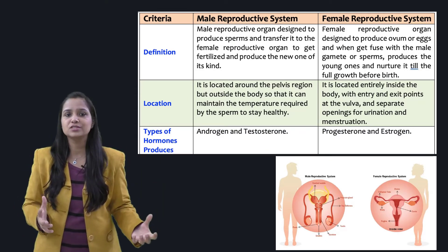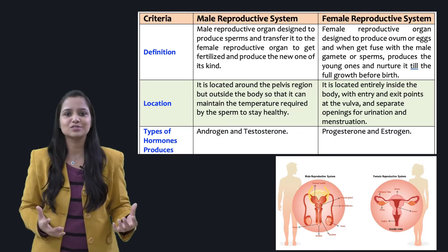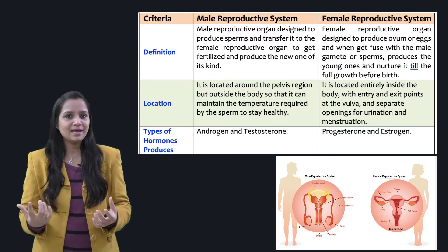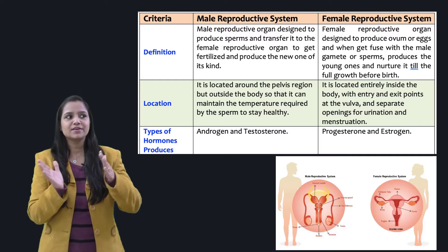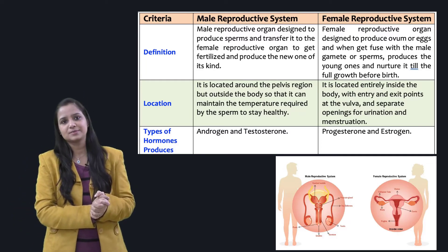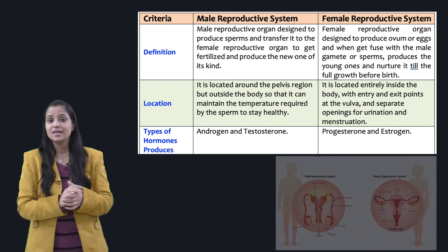The third point is the production of hormones. In males, they secrete androgens and testosterone, while in females they secrete progesterone and estrogens.